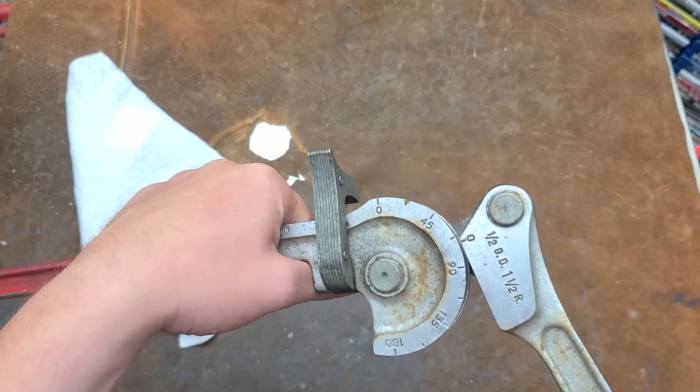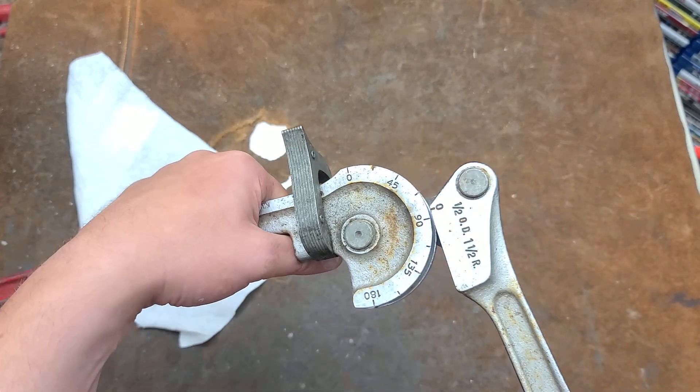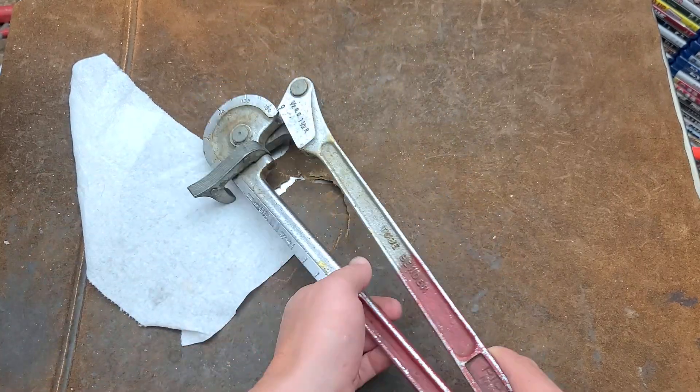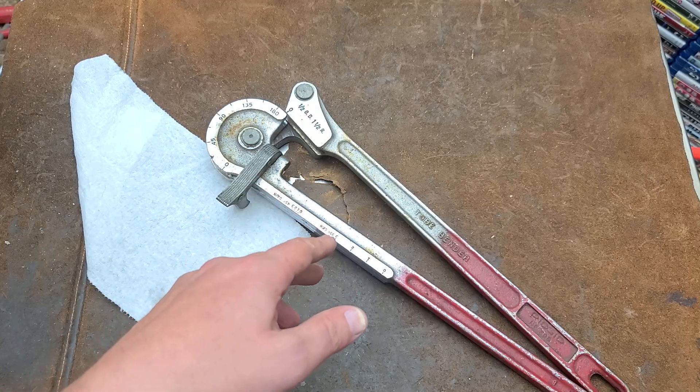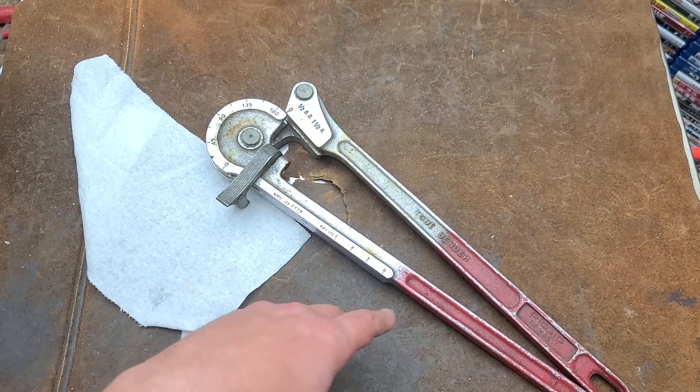The sizes you'll find these in are the common tubing sizes in North America: quarter inch, three-eighths, half inch, three-quarter inch, and one inch.